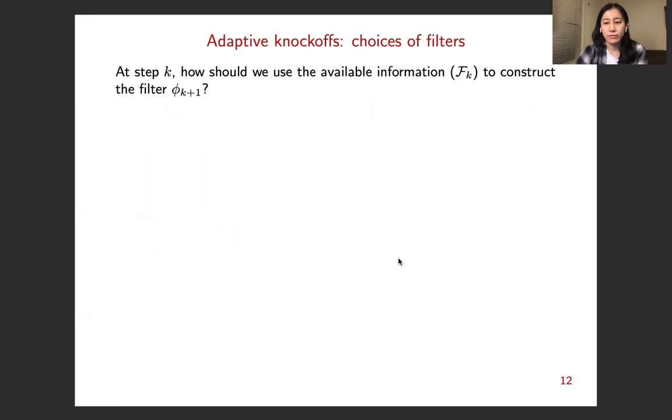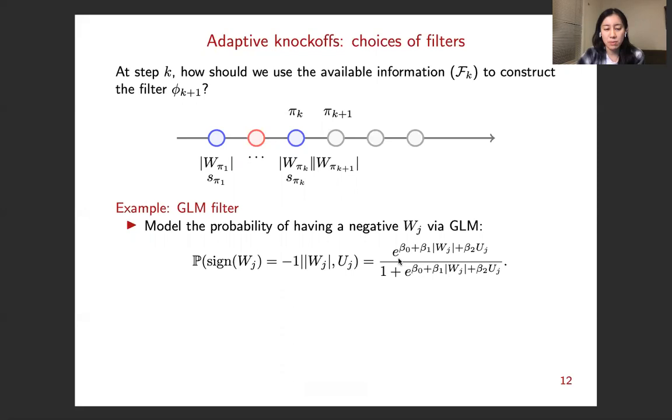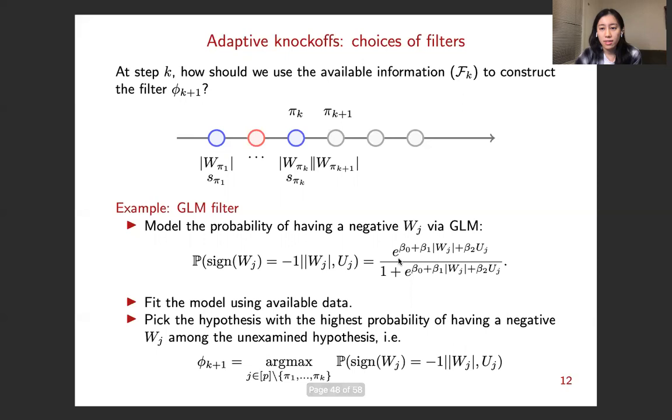So having stated this requirement for the FDR control, we here present a simple example of how to construct such a filter. So suppose, as in this plot, we're at step k, we want to select from the gray balls, the one with the highest probability of being a blue ball, because we want to keep all the red balls towards the end of the ordering. So we can actually do this by modeling the probability of having a negative wj, which is having a blue ball in this plot. So this can be done by a logistic model, and we can fit the model using the available data. So the available data is the examined hypotheses. And then we can use the fitted model to estimate the probability of having a blue ball in the unexamined hypotheses and pick the one with the highest probability of having a negative wj.